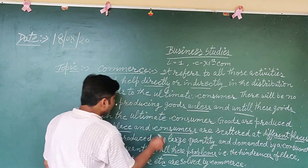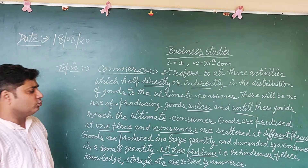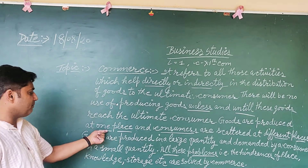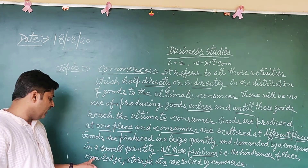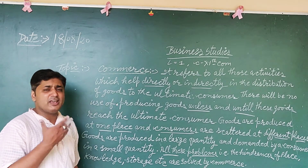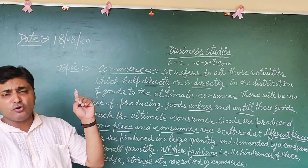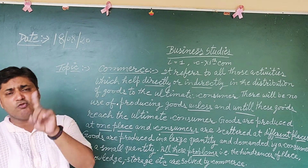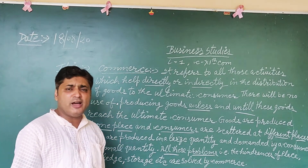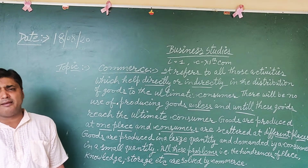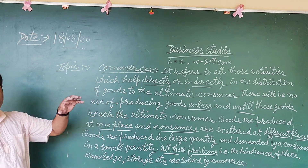All these problems faced are called hindrances. The hindrance of place refers to the problem of the gap between where goods are produced and where they are available for the consumer to purchase. The hindrance of knowledge — the lack of availability of information about the product — is resolved through advertisement. Knowledge about all related topics is also provided, and commerce removes these hindrances.